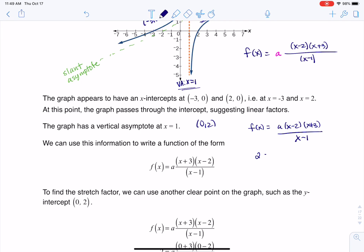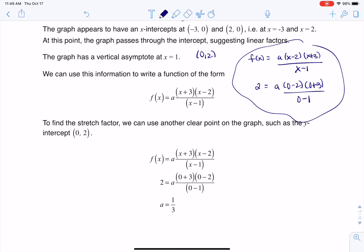Alright, so here we go. I'm going to let 2 be equal to y. This will be a times (0 - 2) times (0 + 3) over (0 - 1). And this work that I'm doing right in here, you can see that I've mapped out. When you solve for a, I'm going to head down this way.